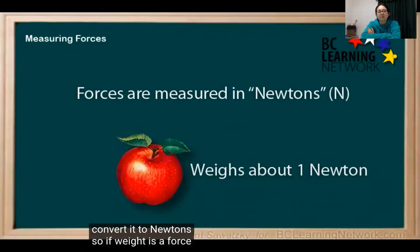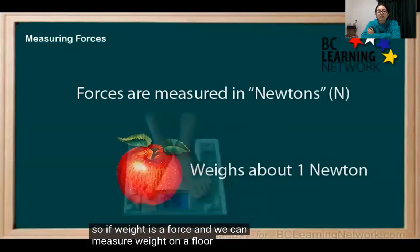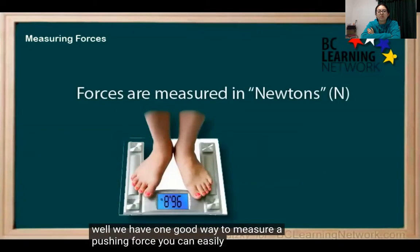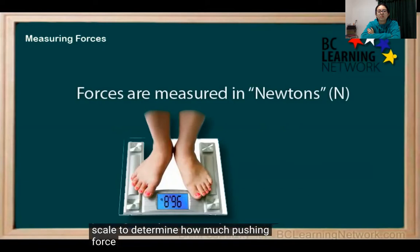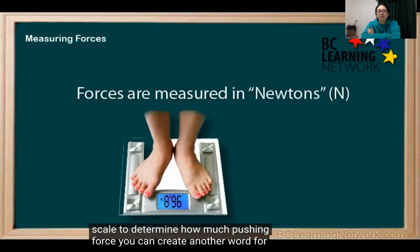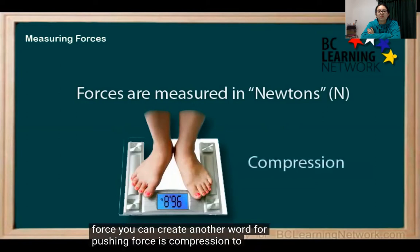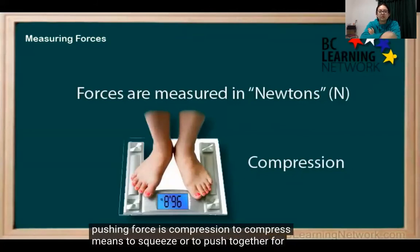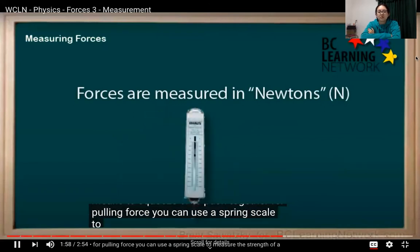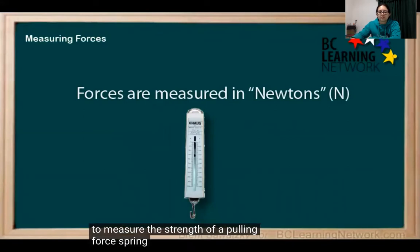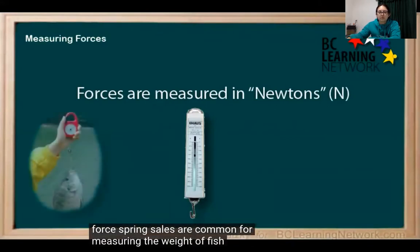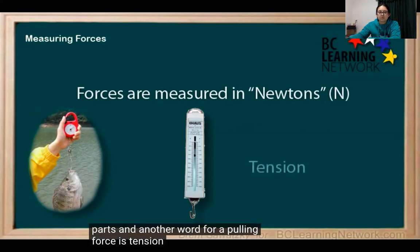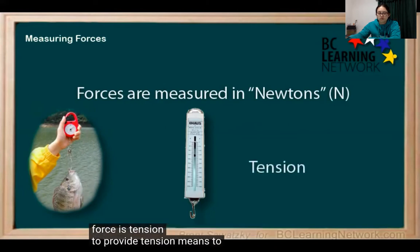So if weight is a force and we can measure weight on a floor scale, then we have one good way to measure a pushing force. You can use a floor scale to determine how much pushing force you can create. Another word for pushing force is compression — to compress means to squeeze or push together. For pulling force, you can use a spring scale to measure the strength of a pulling force. Spring scales are common for measuring the weight of fish or bike parts, and another word for a pulling force is tension.